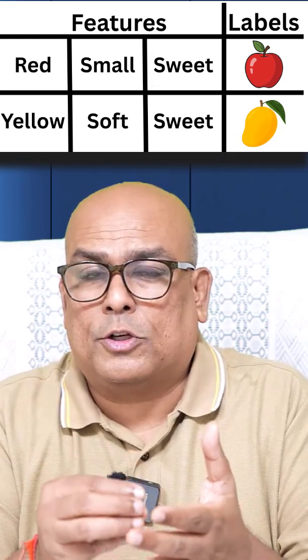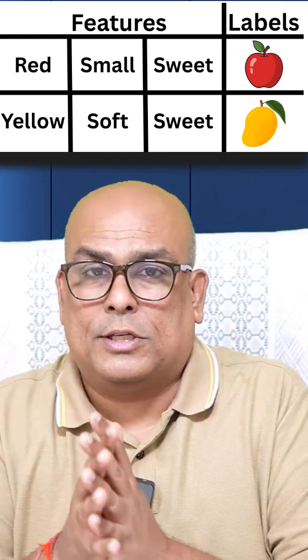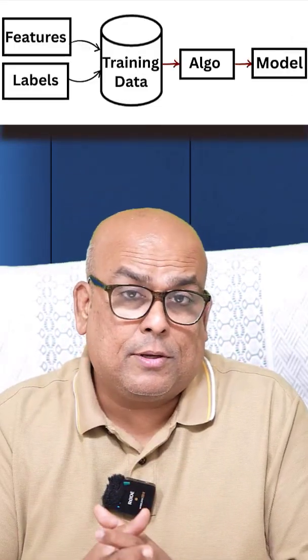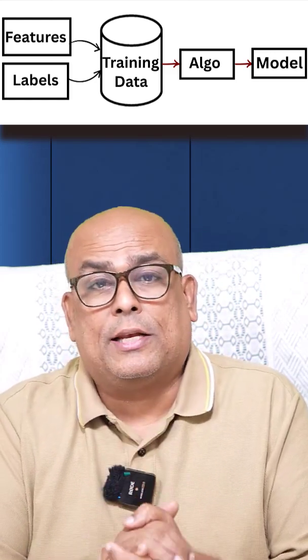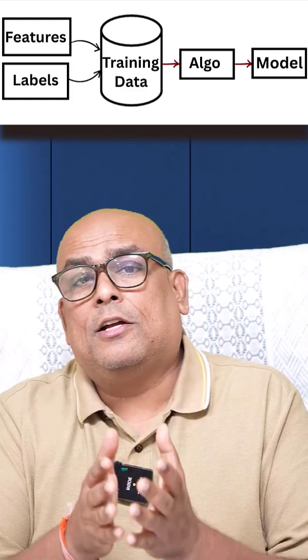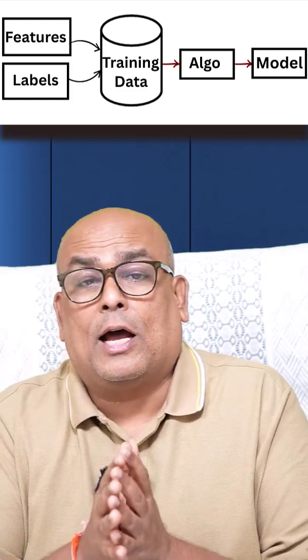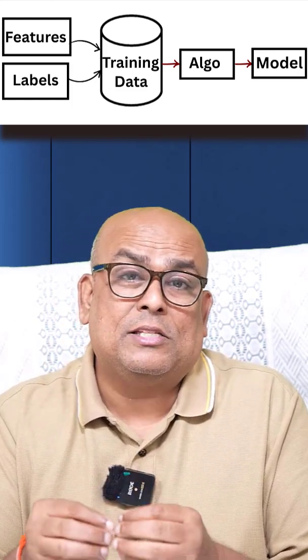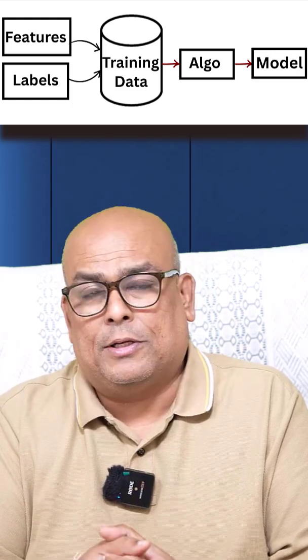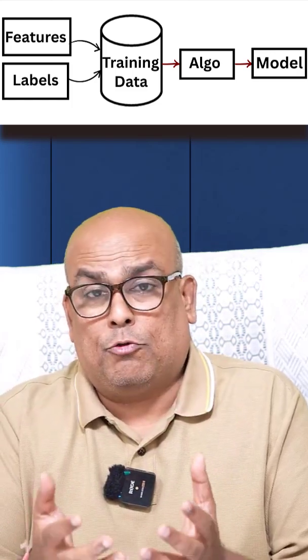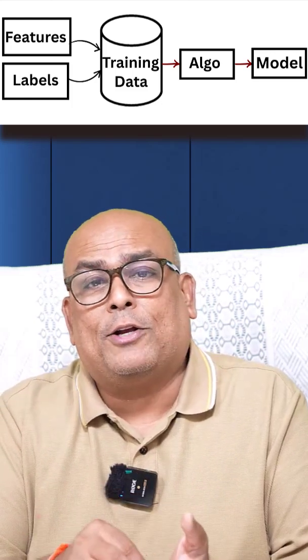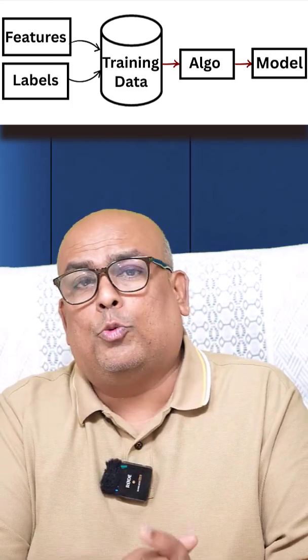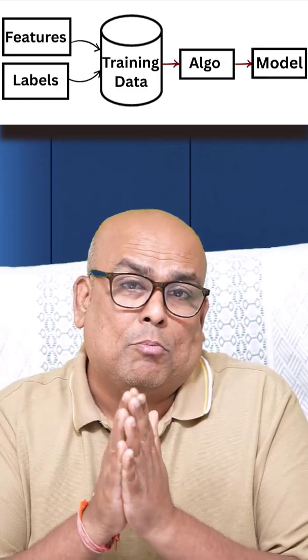If you tell it yellow, soft and sweet, the feature is yellow, soft, sweet and the label is mango. The training data, which is in the format of features and labels, is fed to the algorithm, and the output of the algorithm is a model.